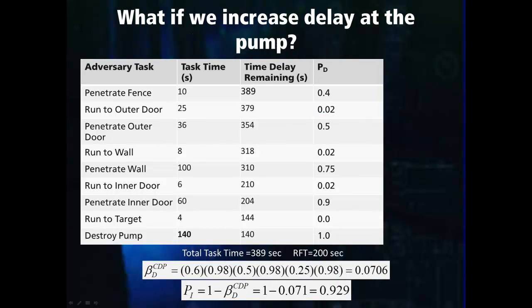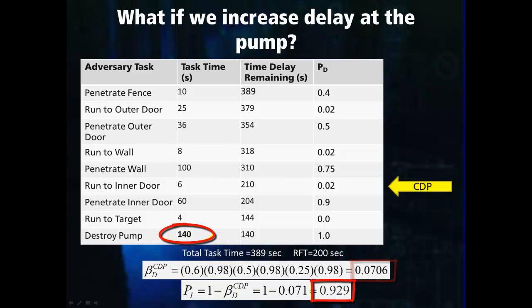In this table, we again have the original pathway, but this time have added protection at the pump, which has increased the delay from 35 seconds to 140 seconds. Referencing the time remaining column, this upgrade changes the critical detection point to before running to the inner door. As a result, the detection elements up to this task are included in the interruption probability, which changes the non-detection probability to 0.0706 and the interruption probability to 0.929.